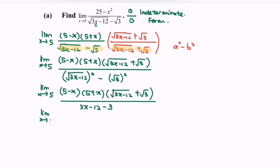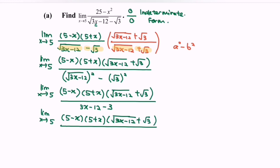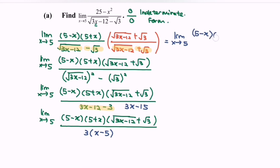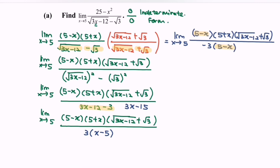Taking the limit as x approaches 5: the denominator simplifies to 3x minus 15. We can factorize out 3 to get 3(x minus 5). Notice we need a common term, so we rewrite the denominator as negative 3(5 minus x). Now we have (5 minus x) as a common term in both the numerator and denominator, which we can cancel.